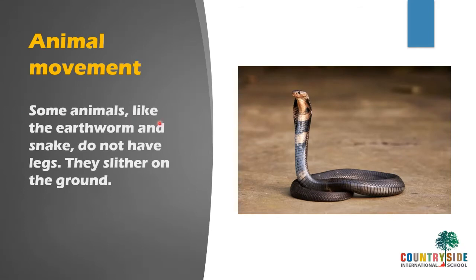Some animals like earthworm and snake do not have legs. Can you see the snake? You must have seen earthworms also — they do not have legs. Because they do not have legs, they slither on the ground. You must have seen snakes moving with a wave-like motion of the body — that is called slithering.